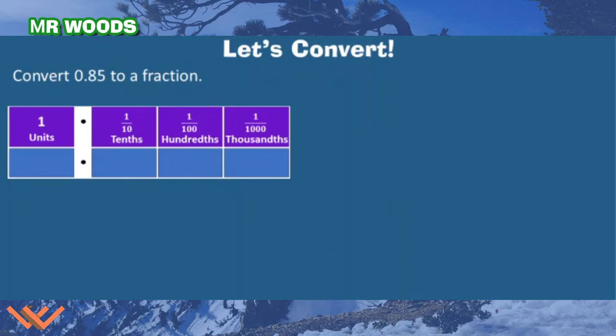Let's convert zero point eight five to a fraction, and that's eighty-five hundredths. So I can just plug in the numbers here. There's zero units, one unit, there's my point, eight tenths and five hundredths. I don't have any thousandths there at all. What I can do is I can write this out. I know that my denominator is going to be one hundred, so one hundred goes here and eighty-five at the top. That's my numerator.